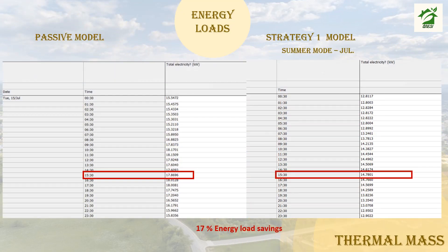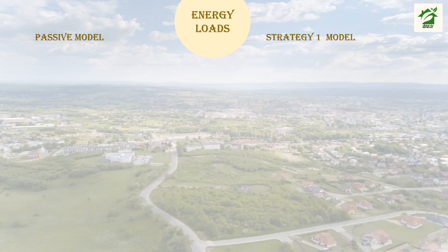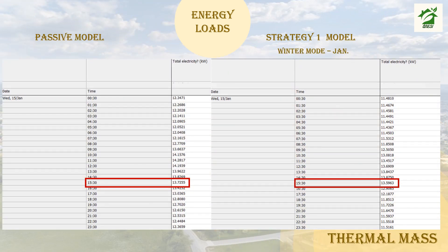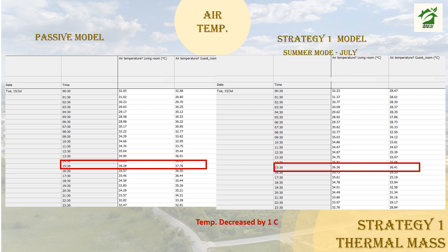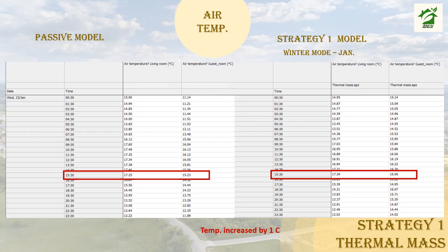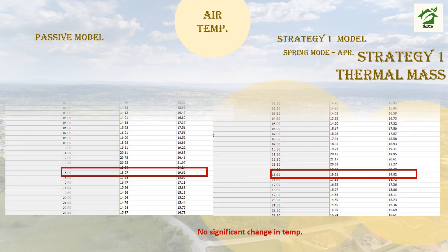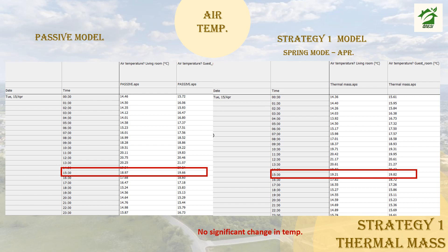After applying strategy one, the thermal mass model achieved additional energy load savings compared to the passive model. Additional savings were also noted in winter after applying the thermal wall and slab. A further reduction of 8% was noticed in spring. With the thermal mass strategy, the temperature in summer decreased by 1 degree Celsius, showing this strategy is effective in summer. In winter, the temperature increased by 1 degree Celsius, which is considered an enhancement. In spring, no significant change in temperature was noted after applying thermal mass.